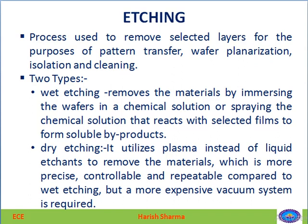There are two types of etching process: one is wet etching, and the second is dry etching. In wet etching, material is removed by immersing the wafer in a chemical solution, or spraying a chemical solution that reacts with the selected films to form soluble byproducts. In dry etching, instead of immersing the wafer in a chemical, we use plasma. This process is more precise, controllable, and repeatable compared to wet etching, but it is more expensive.